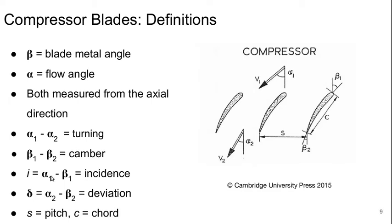We call I the incidence, alpha 1 minus beta 1, so the difference between flow and metal angles going into the blade row. And delta is the deviation. This is the difference between the flow angle and the blade angle leaving the blade row. The distance between the blades is the pitch. And the chord is measured along the true chord of the airfoil, if not the axial chord.